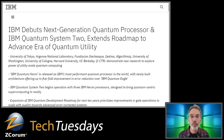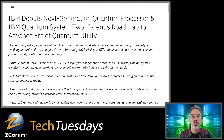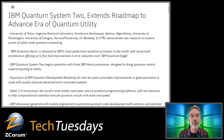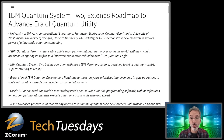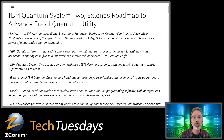Looking at IBM's press release: IBM debuts next-generation quantum processor and IBM Quantum System 2, extending their roadmap to advance the era of quantum utility. IBM Quantum Heron is released as IBM's most performant quantum processor with newly built architecture, offering up to a five-fold improvement in error reduction over IBM Quantum Eagle, which came out a couple of years ago.